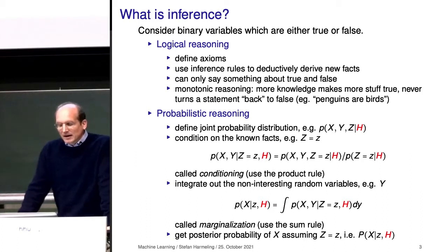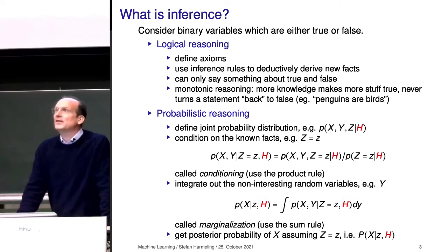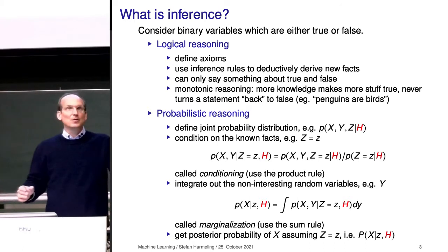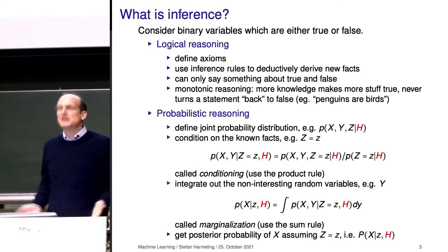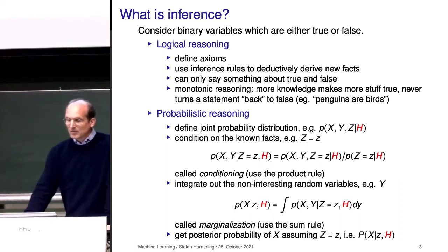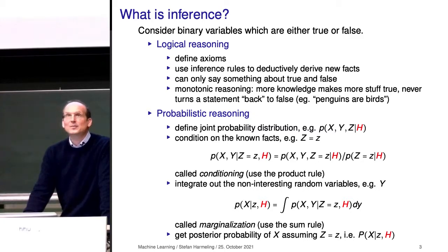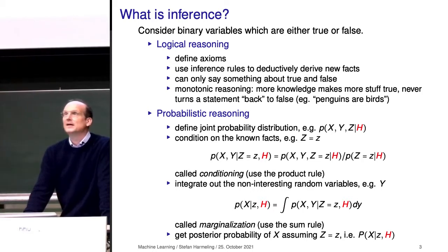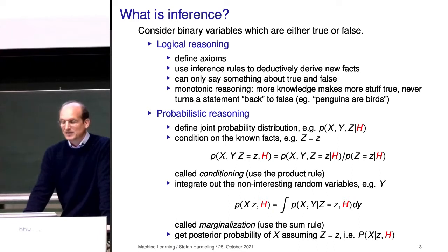Instead of defining axioms, we define a joint probability distribution. Similar to how axioms define our world — what happens if the door is open or closed — the joint probability defines what's possible and how likely. It's not only what's possible, but also how likely certain situations are. Suppose you have 26 variables — you already have 2^26 minus 1 numbers to store for all possible states. So this is describing everything we care about in our situation, basically defining the model.